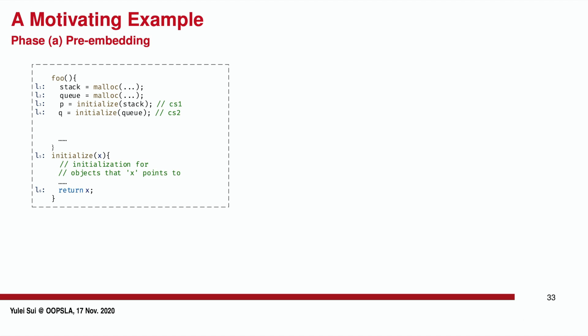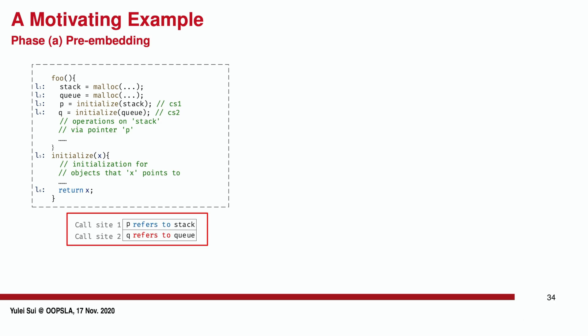The initialized values then pass back to pointers P and Q respectively. We aim to show that our embedding can precisely preserve the dependence relations that P only refers to the stack and Q only refers to the queue object in a context-sensitive manner. Any operations through P only manipulate stack but not the queue object.